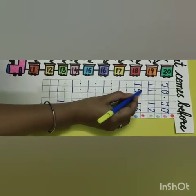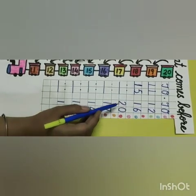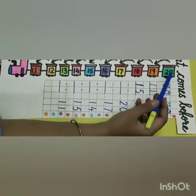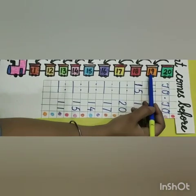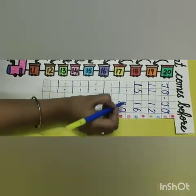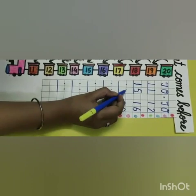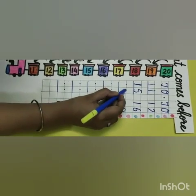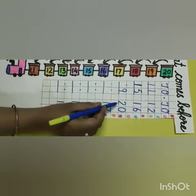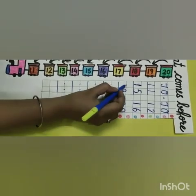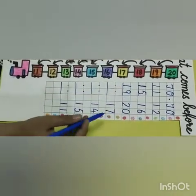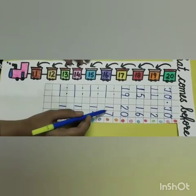15 comes before 16. Our next number is 20. Tell me, what comes before 20? 19. We can do it this way also: 9 comes before 0, and 1 comes before 2. So 19 comes before 20.